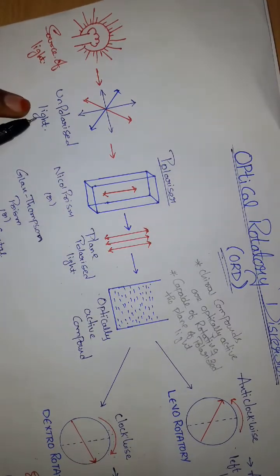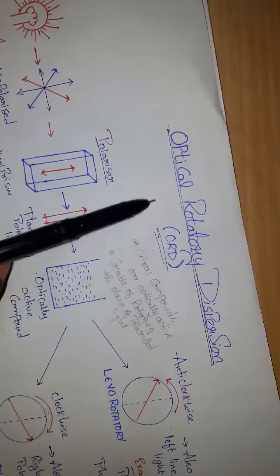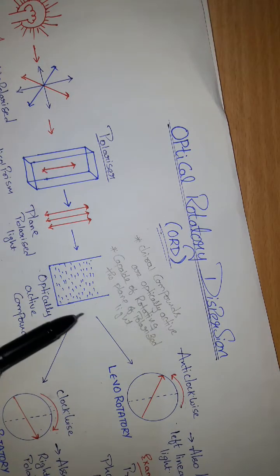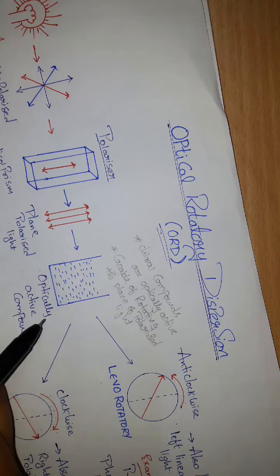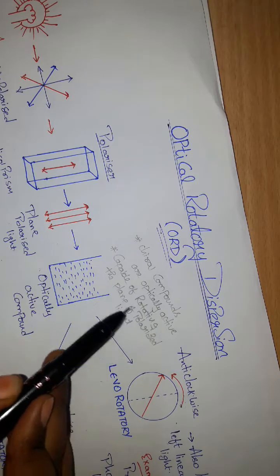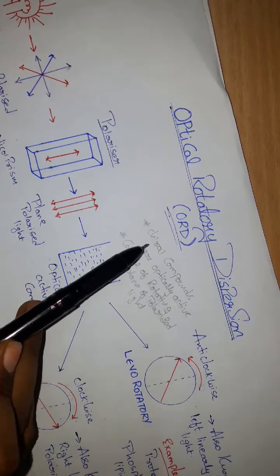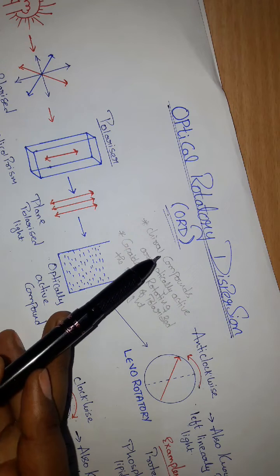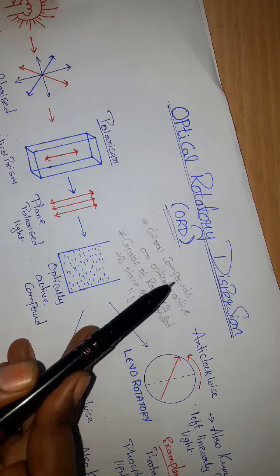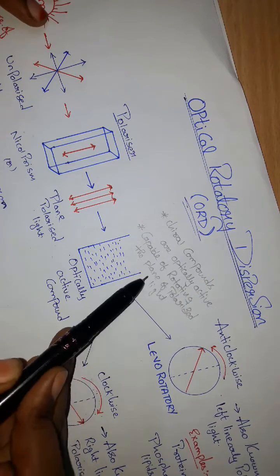When unpolarized light is passed through a polarizer, we get plane polarized light. In ORD, we use an optically active compound. An optically active compound is one having a chiral center — a carbon with four different functional groups — which is capable of rotating the plane of polarized light. Such compounds are optically active, meaning their mirror images exist.